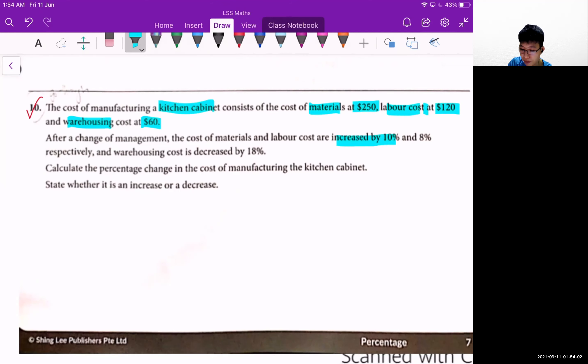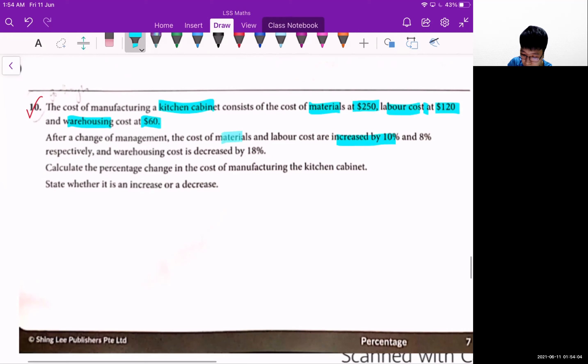Now each of these individual costs - material is increased by 10%, labor costs increased by 8%, and warehouse decreased by 18%. You need to calculate the percentage change in the cost of creating this kitchen cabinet and determine whether that is an increase or decrease.